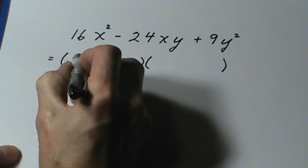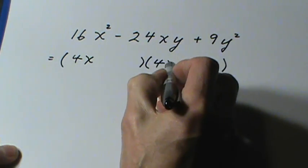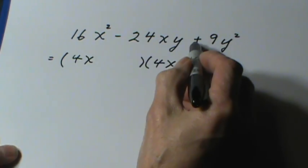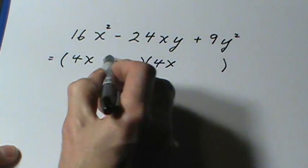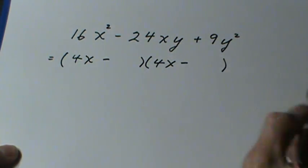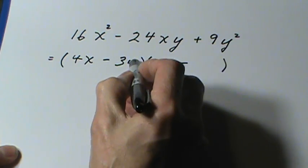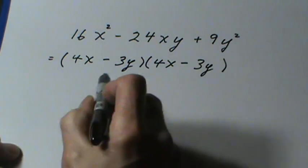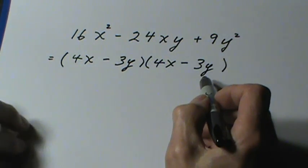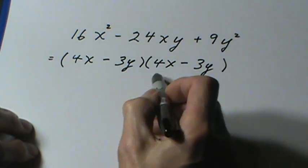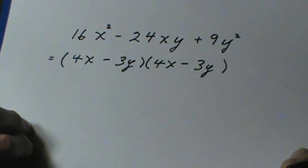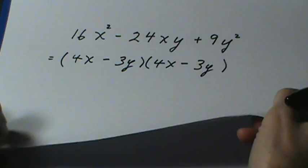You see, 4x times 4x gives me the 16x squared. The signs are the same. That must be a plus on the end, which gives us 2 minus signs in the middle. 3y times 3y gives me the 9y squared on the end. And the outer product, negative 12xy, and the inner product, negative 12xy, add together to give me the negative 24xy in the middle.